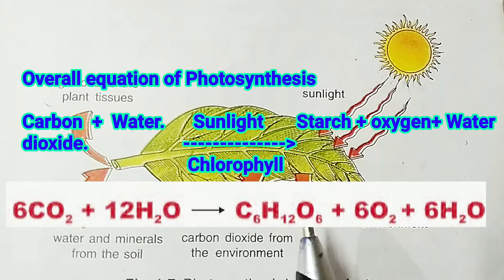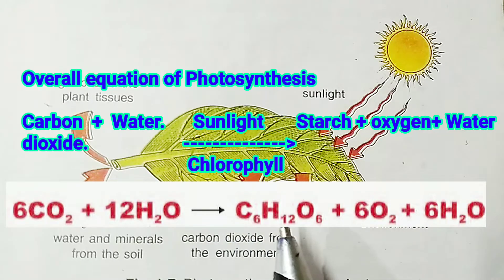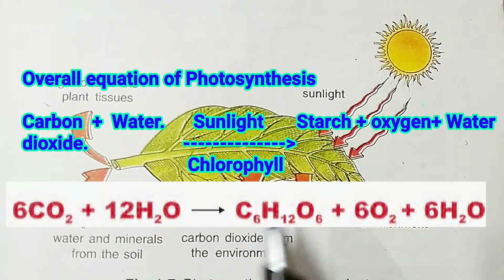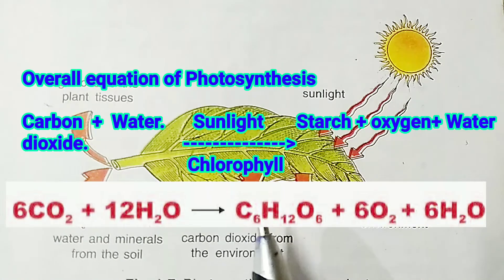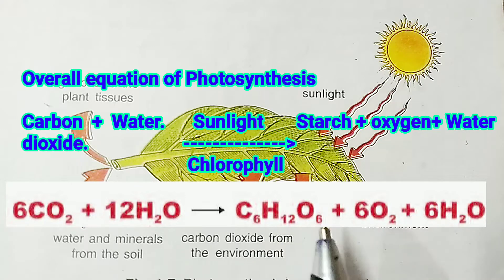When we write the reaction of photosynthesis, we write 6 molecules of carbon dioxide reacting with 12 molecules of water to give carbohydrate, which is also known as starch, and oxygen and water are released in the process. This reaction takes place in the presence of light energy — generally sunlight — and this sunlight is trapped by chlorophyll pigments. This is the overall equation of photosynthesis.